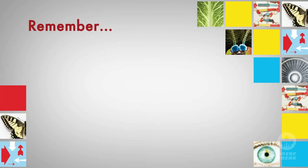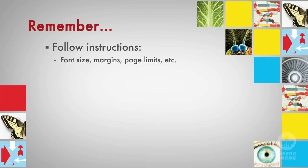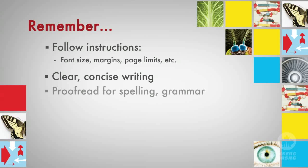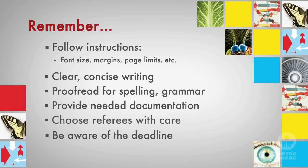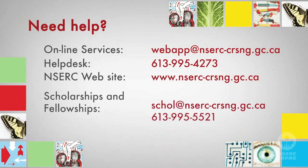We would like to leave you with these last reminders. Follow instructions. Pay attention to font size, margins, page limits, etc. Make sure you use clear, concise writing. Proofread for spelling and grammar. Be sure to provide all needed documentation. Choose your referees with care, and be aware of the deadline. NSERC's online resources also include two other videos: one that offers tips on making your application stand out for reviewers, and another that explains the peer review process that happens after you submit your application. If you have questions, please refer back to the instructions for completing Form 201 or other documents on our website, or contact us directly.